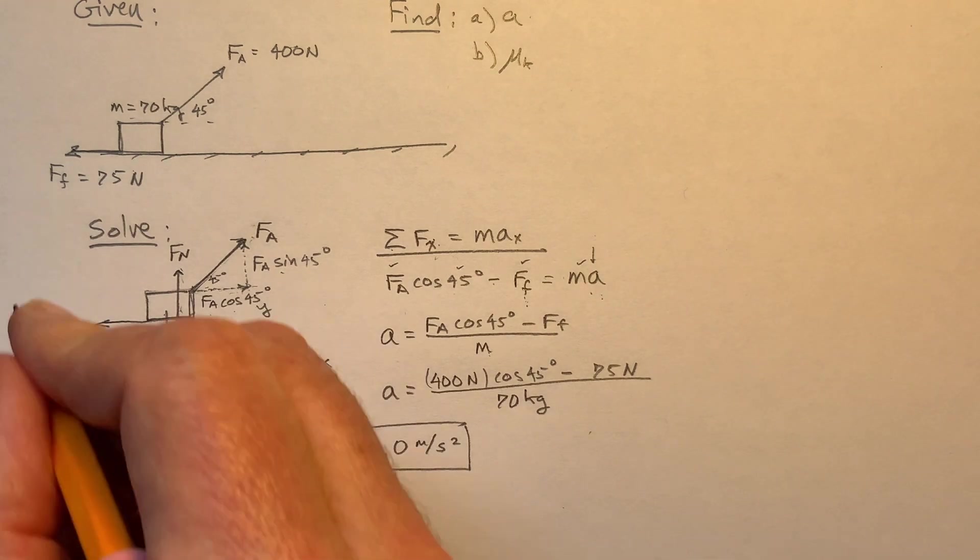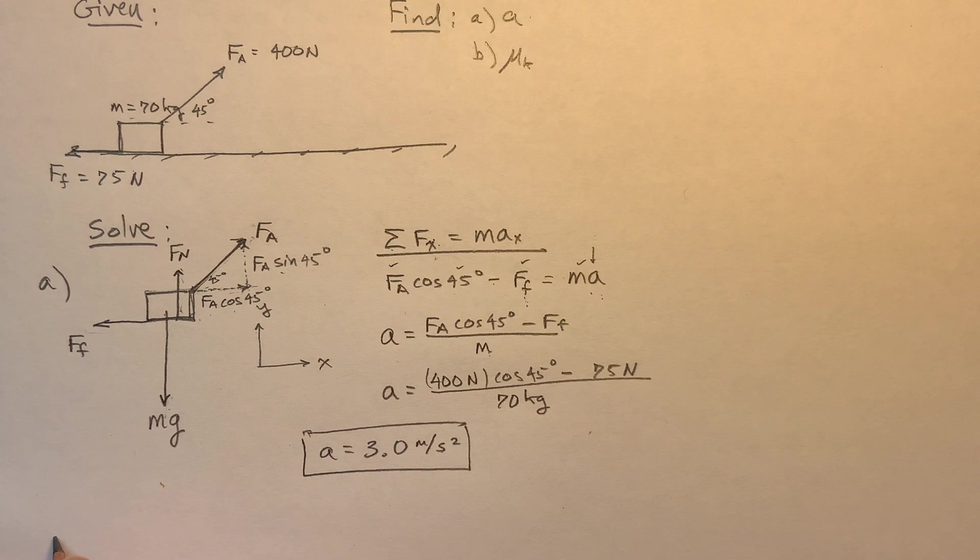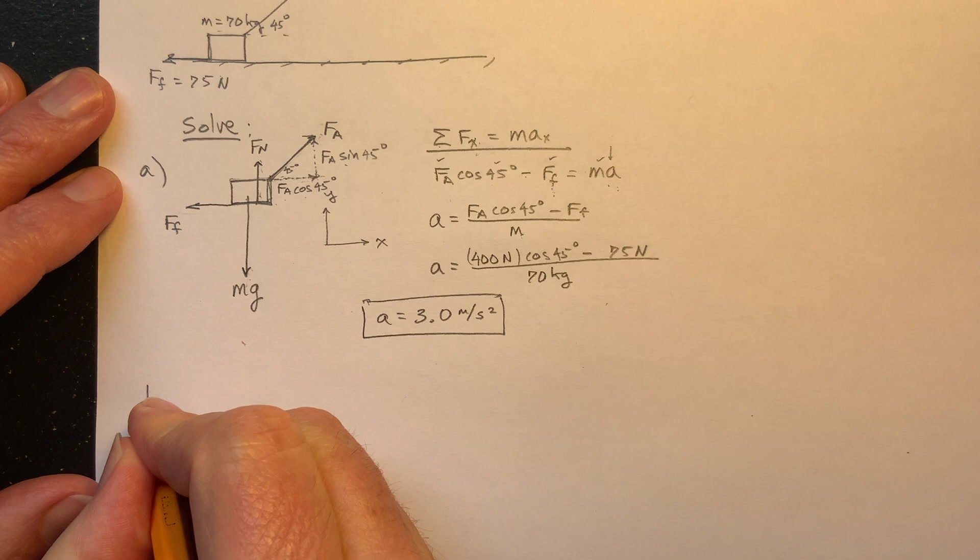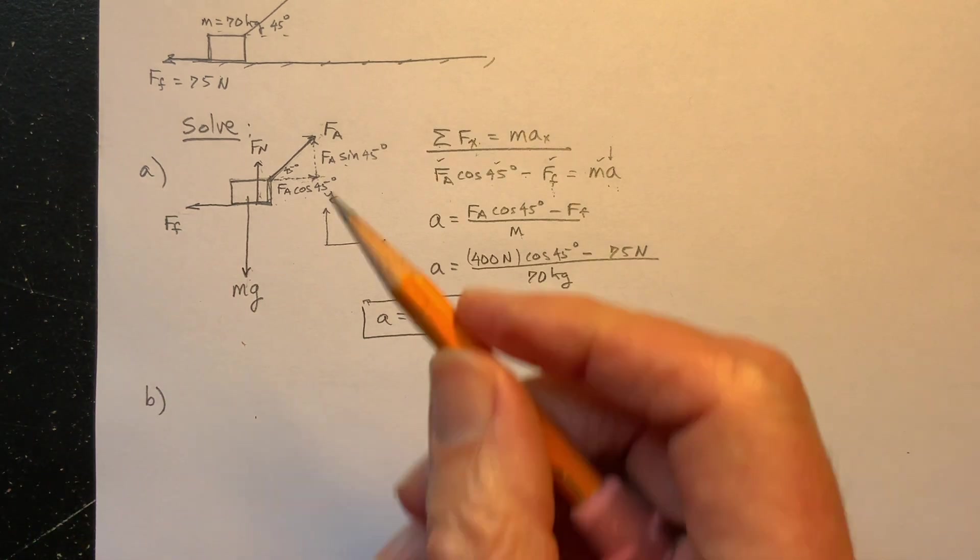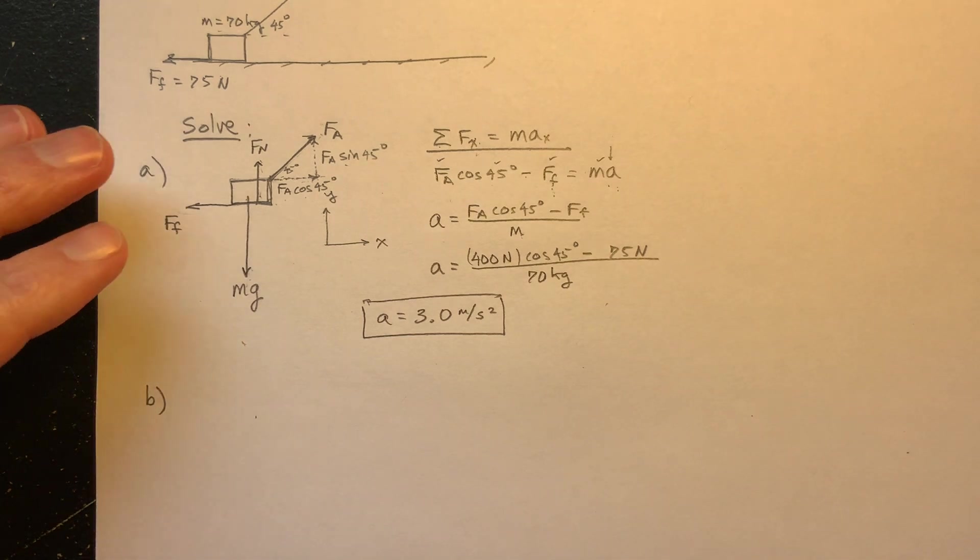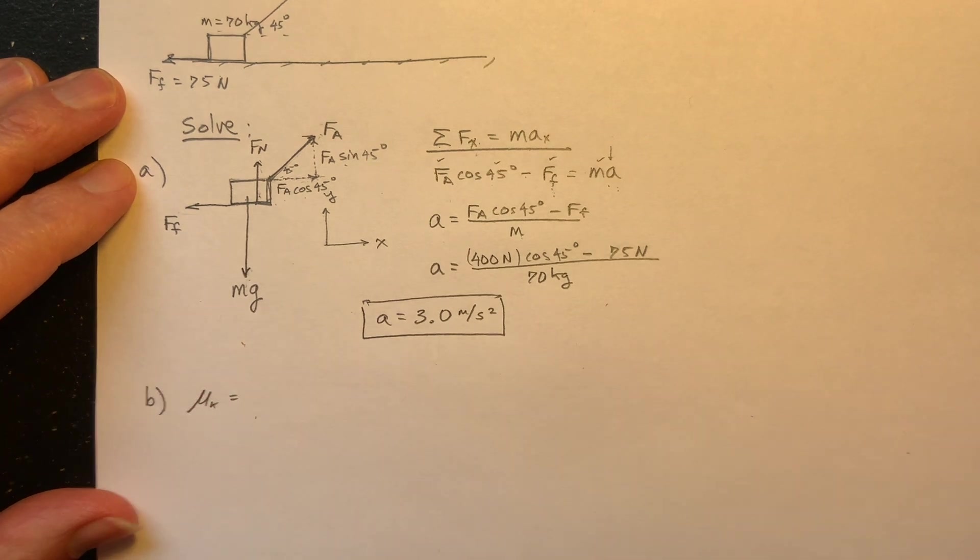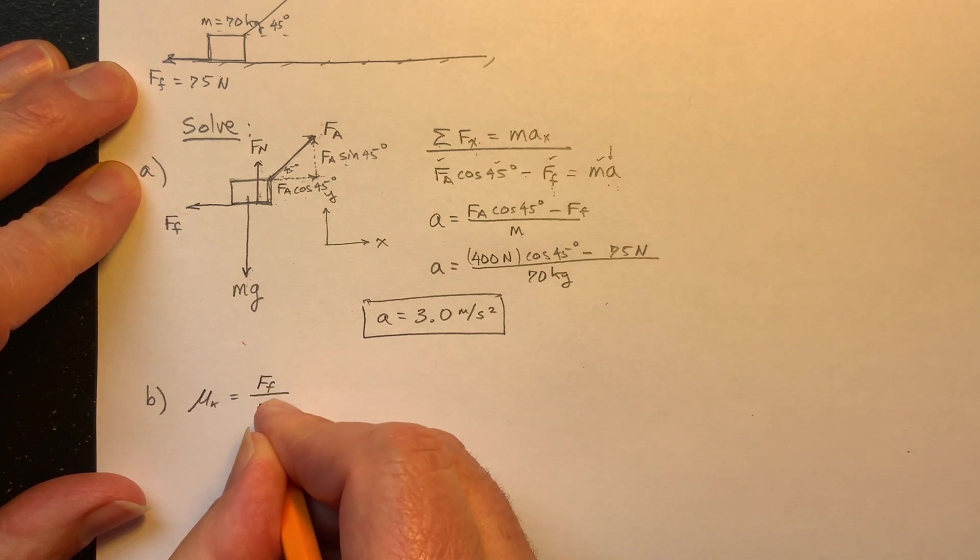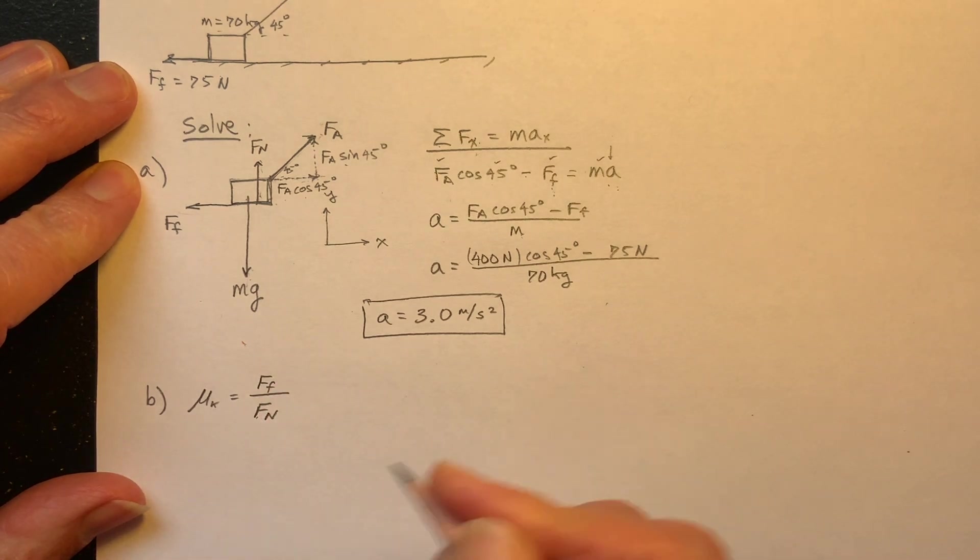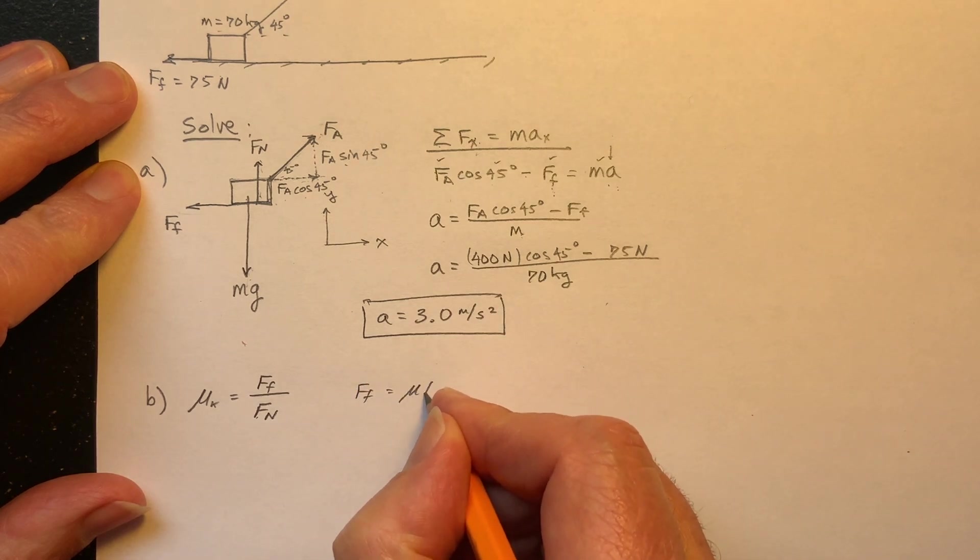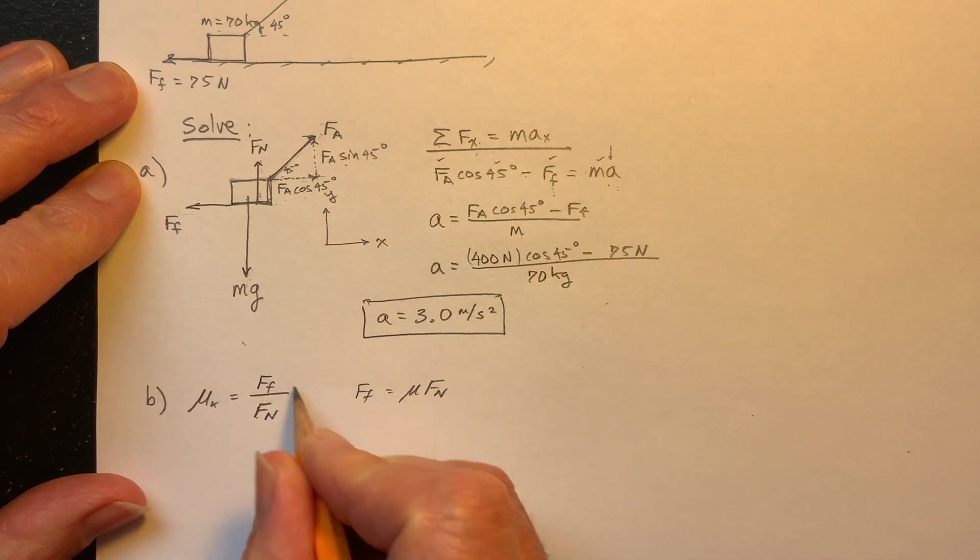There you go. Now, this is all for part A. Now, what about part B? Well, we want the coefficient of kinetic friction. Well, what's the basic equation? How is kinetic friction defined? The coefficient of kinetic friction is, by definition, the ratio of the force of friction divided by the normal force. Or you might see it like this, that the force of friction is equal to mu times the normal force. And so I've just rearranged it to look like this.